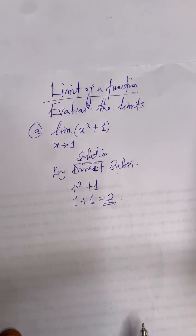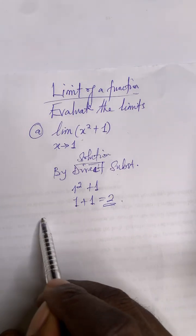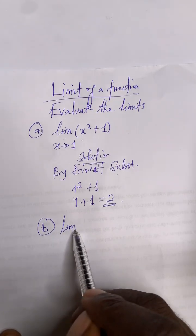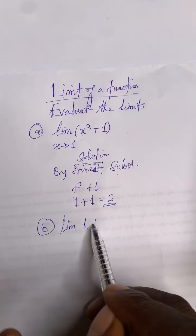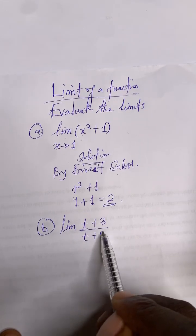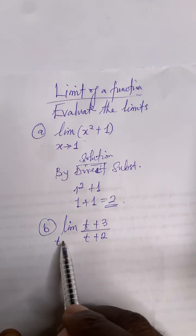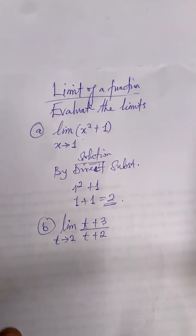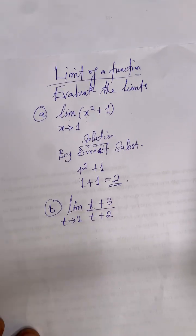Now I'm going to give you another one to try. Evaluate the limit of (t + 3) over (t + 2) as t tends to 2. Try this one and put the answer in the following section. Thank you.